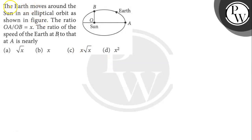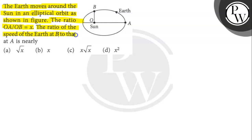Hello, let's read the question. The question says: the Earth moves around the sun in an elliptical orbit as shown in the figure. The ratio OA by OB is equal to X. The ratio of the speed of the Earth at B to that at A is nearly how much? Let's find out.